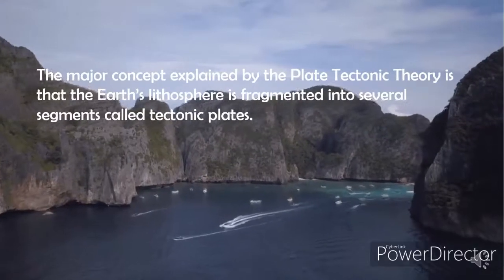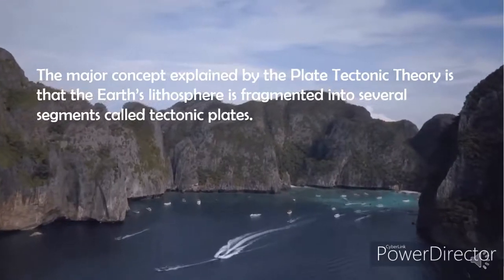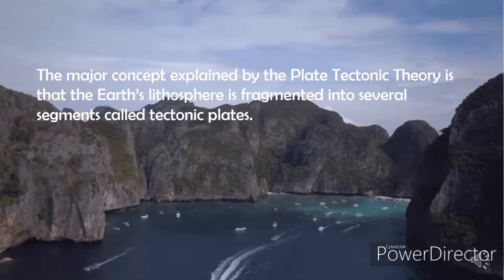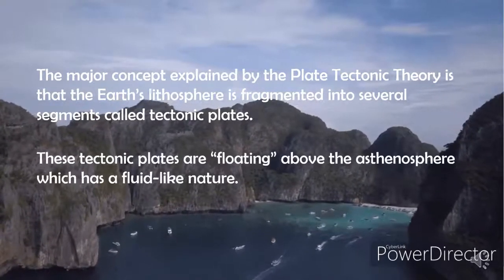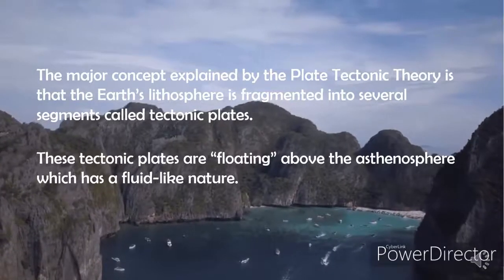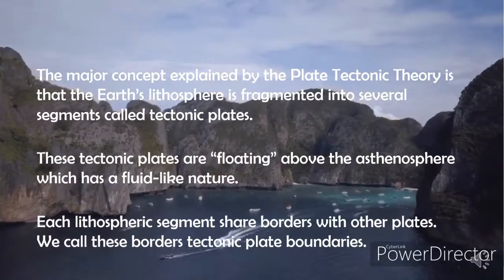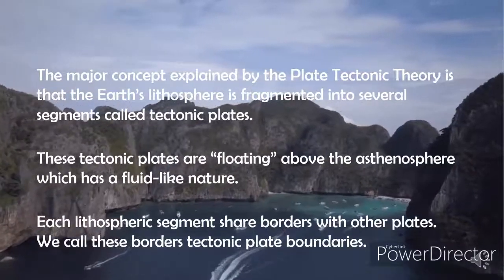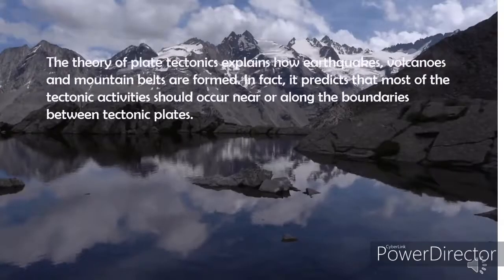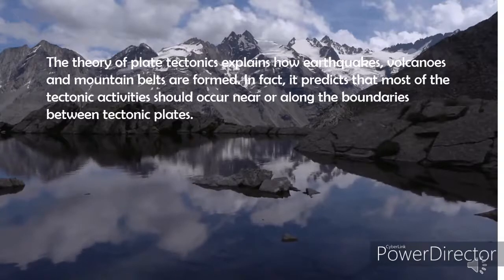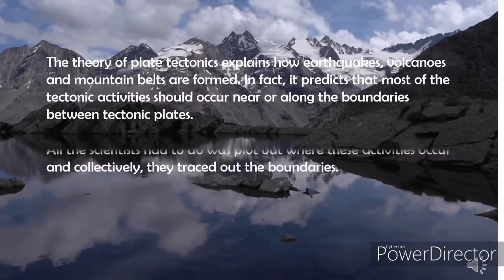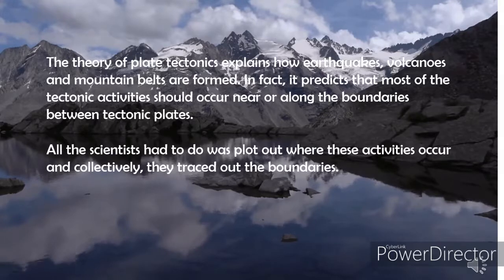The major concept explained by plate tectonic theory is that Earth's lithosphere is fragmented into several segments called tectonic plates. These tectonic plates float above the asthenosphere, which has a fluid-like nature. Each lithospheric segment shares borders with other plates — we call these borders tectonic plate boundaries. The theory of plate tectonics explains how earthquakes, volcanoes, and mountain belts are formed, and predicts that most tectonic activity should occur near or along the boundaries between tectonic plates. Scientists plotted where these activities occur, and collectively they trace out the boundaries.